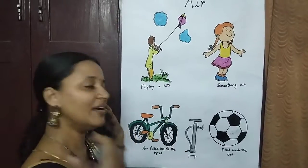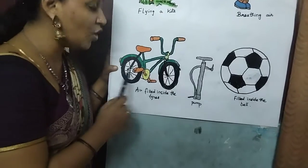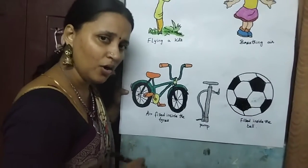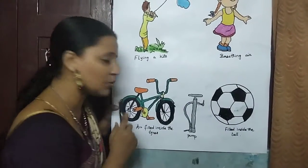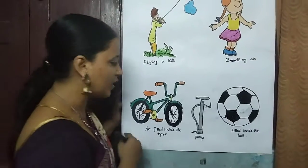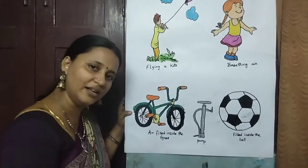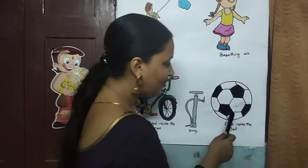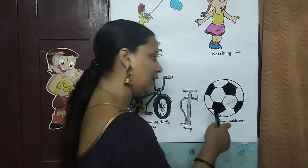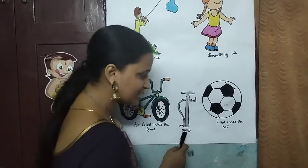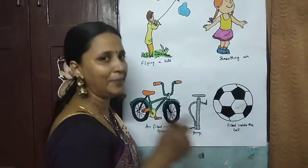The girl is breathing air inside. Have you seen the tires of your cycle or motorbike? What is inside the tire? Air. Air is filled inside the tire so that the vehicle can move. Without air, the vehicle cannot move — be it a cycle or motorcycle. Then when you play football, the ball is inflated with air. You will pump air inside using this pump. You will feel air inside the football so that you can kick and play.